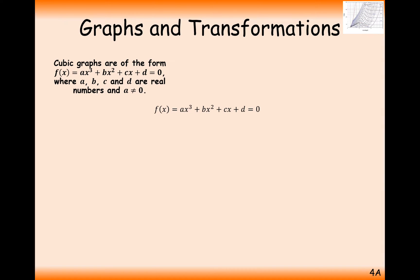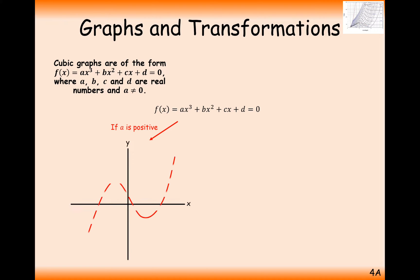Hopefully you've seen cubic graphs before. Their rough shape looks something like this — it starts in the bottom left-hand quadrant and finishes in the top right-hand quadrant. The equation of this graph will be very similar to a quadratic, just with an x-cubed term. With the quadratic looking like a u-shaped graph, why does this graph look like it does?